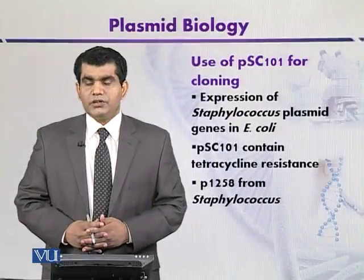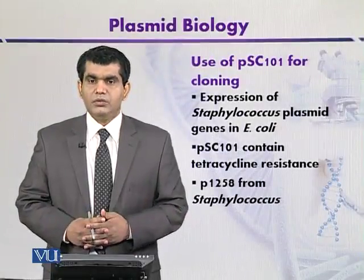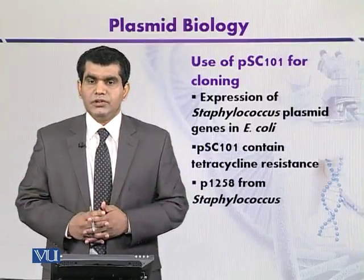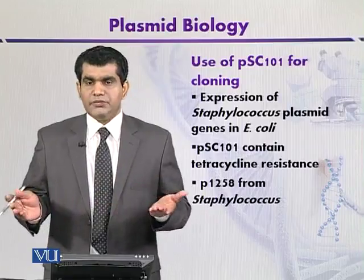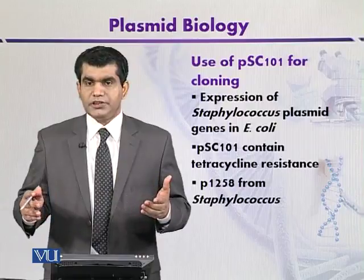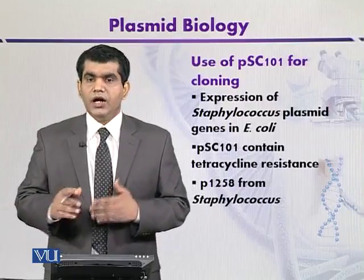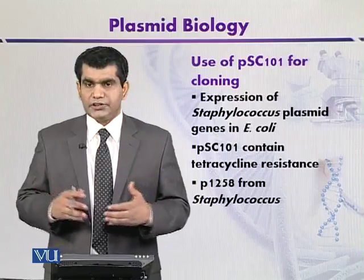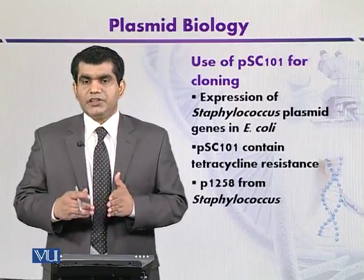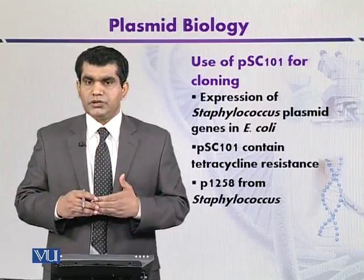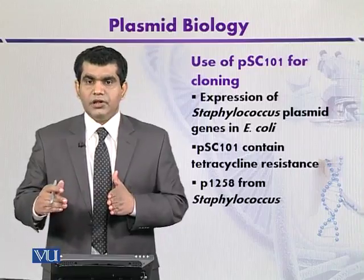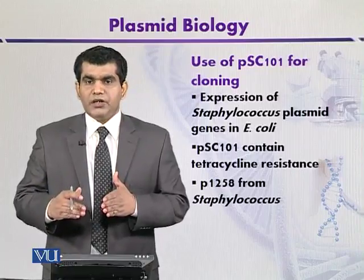Use of PSC-101 for cloning. Although cloning with PSC-101 is not so advantageous, as we have discussed, because the selection of transformants is not easy on the basis of tetracycline resistance. But still, this plasmid, PSC-101, has been used to clone some genes from the plasmid of other organisms like P-1258.